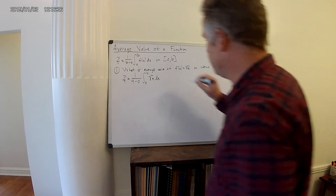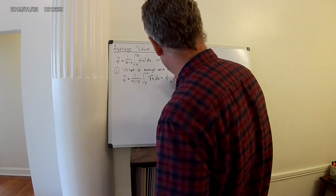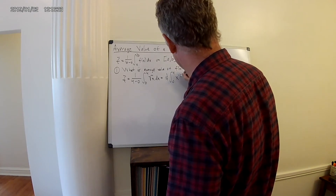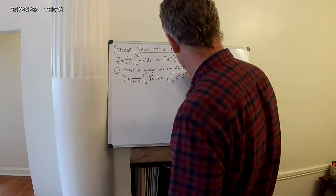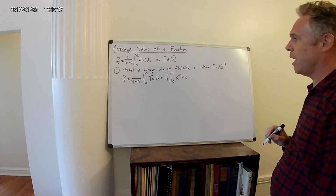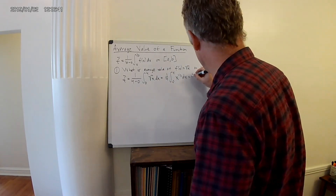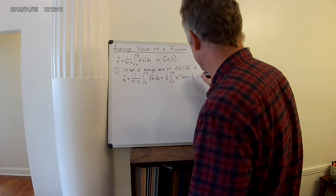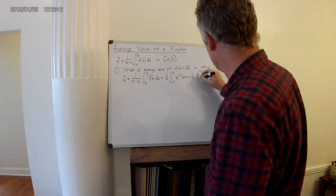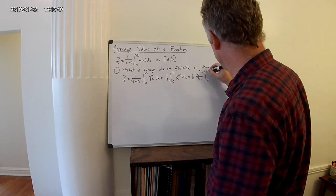This is a simple integral to do. This is 1 over 4 times the integral from 0 to 4 of x to the 1/2 dx. We can now integrate this, and this integrates to 1/4 times x to the 3/2 over 3/2, evaluated from 0 to 4.